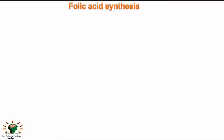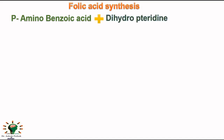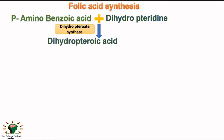In the first step, PABA (para-aminobenzoic acid) interacts with dihydropterin in the presence of the enzyme dihydropterin synthase, and dihydropterin acid is formed.